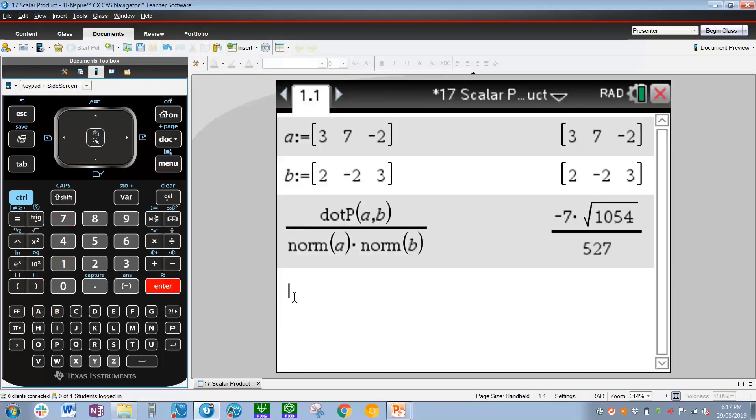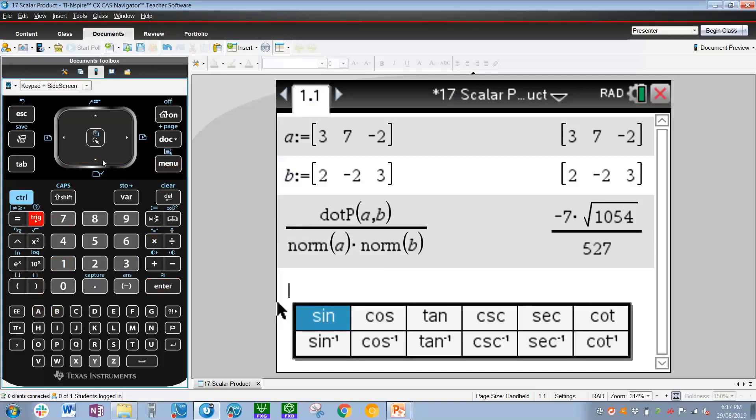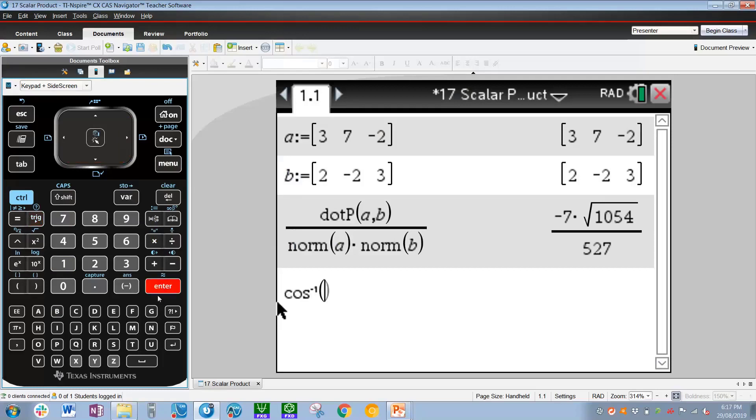So to get the angle, we're going to have to inverse cos this. To get inverse cos, press trig, press right down inverse cos, enter, and simply copy and paste the previous line. Press up, press enter, which copies it into the bracket.